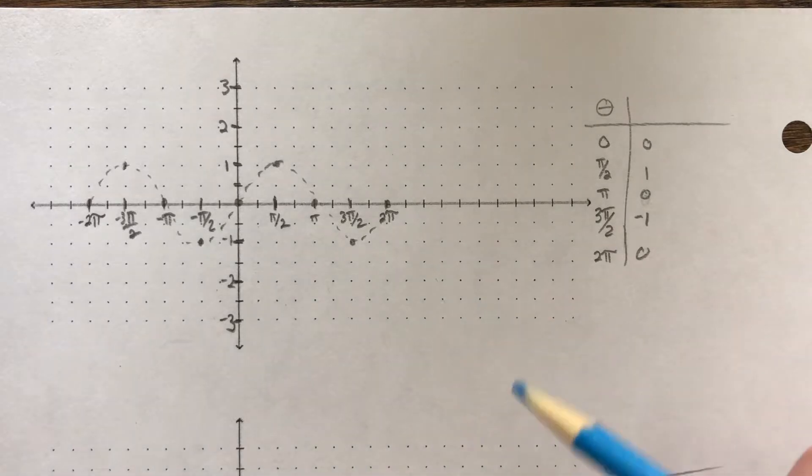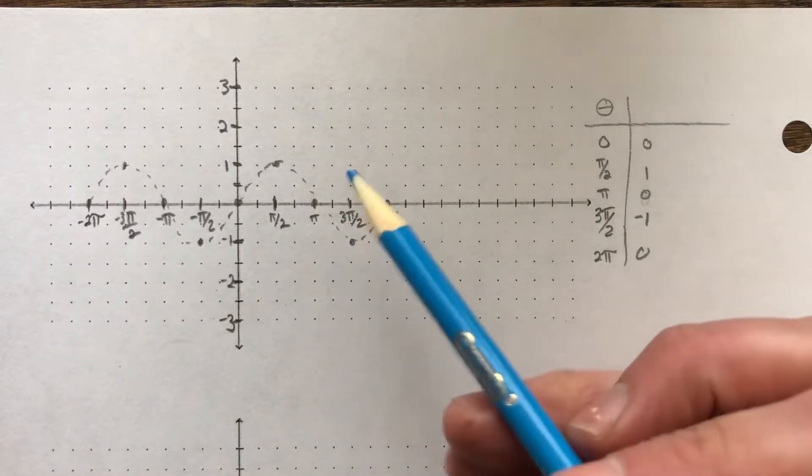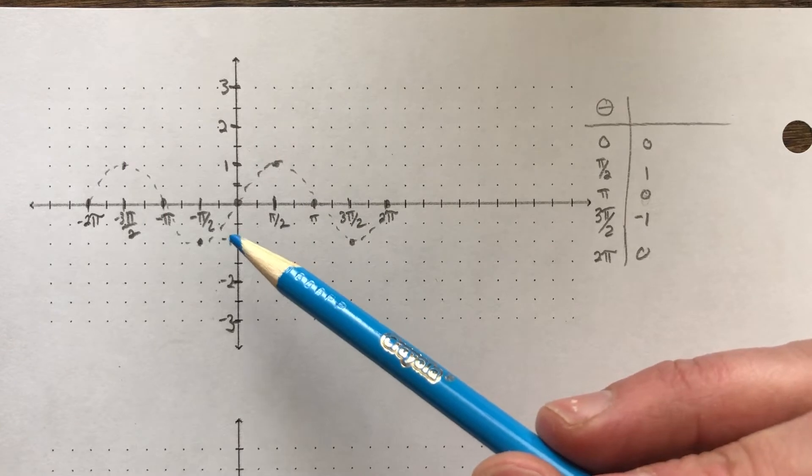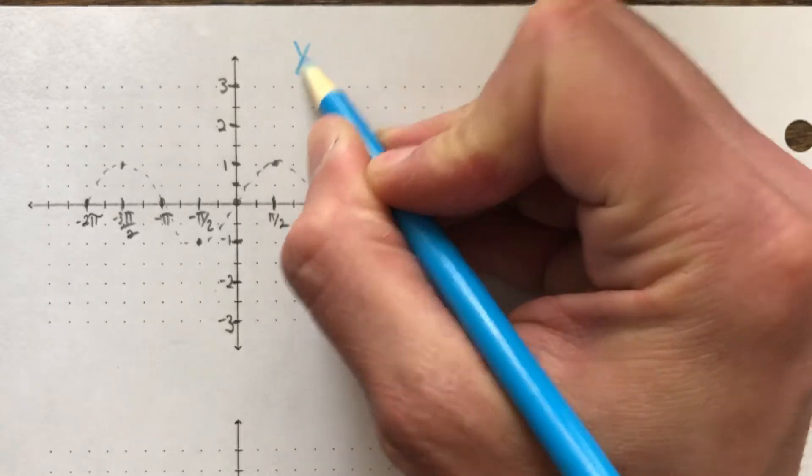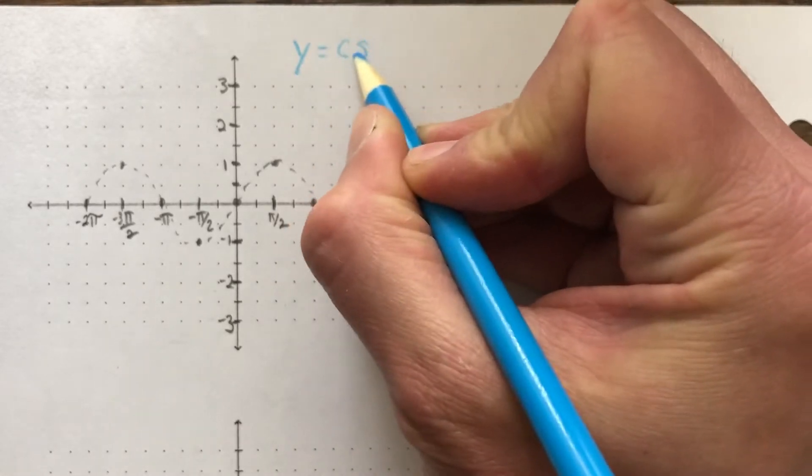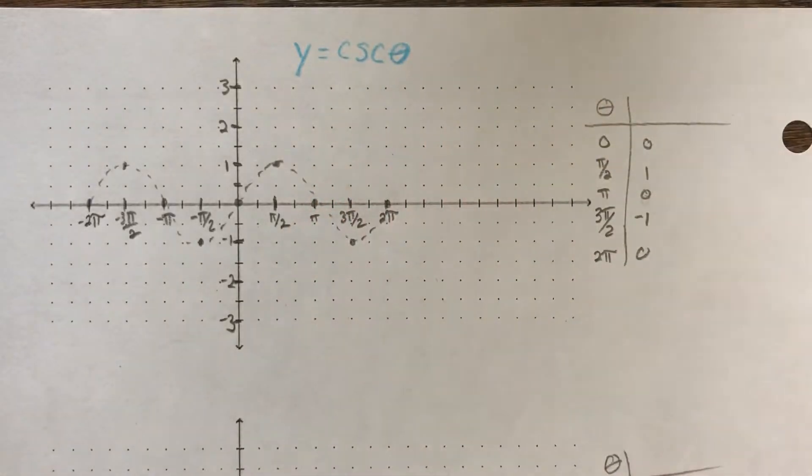Okay, so right here I have the parent function for the sine, okay? So we're going to use that to help us look at cosecant, right? Because cosecant is the reciprocal of the sine.